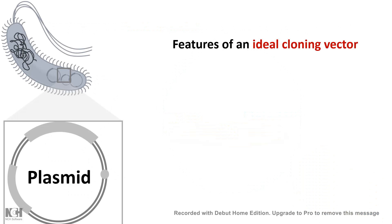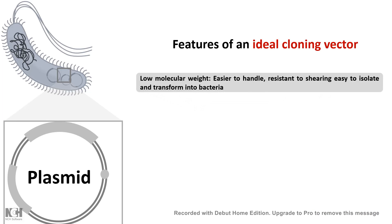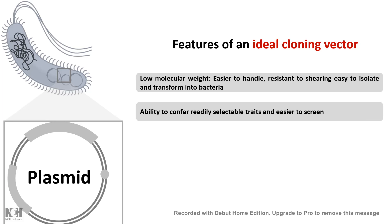Let's look at the key features of an ideal cloning vector. First, it should have a low molecular weight — low molecular weight makes it easy to handle, resistant to shearing, and easy to isolate and transform into bacteria. Second, it should have selectable and screenable markers.